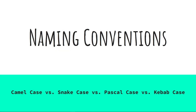If you have been programming for a while, you may have heard the words camel case or Pascal case, and maybe you are wondering what those terms mean. Naming conventions are sets of rules used for naming entities. These conventions are essential for code readability and maintainability. In this video I will explain the differences between the most widely used case types in programming.